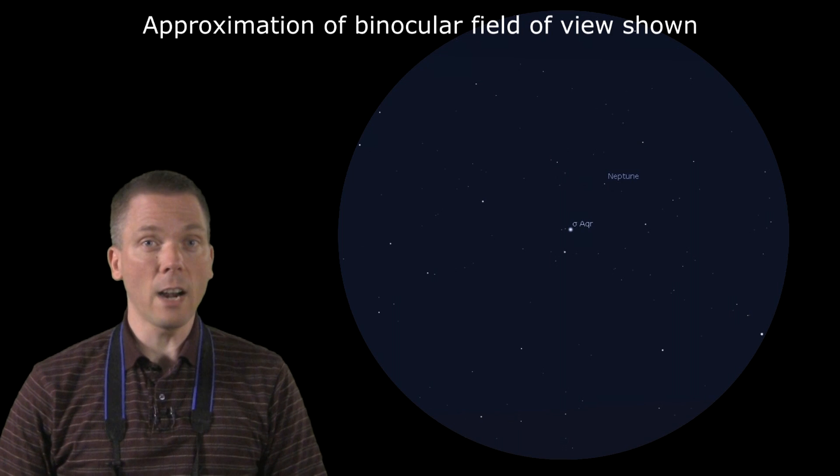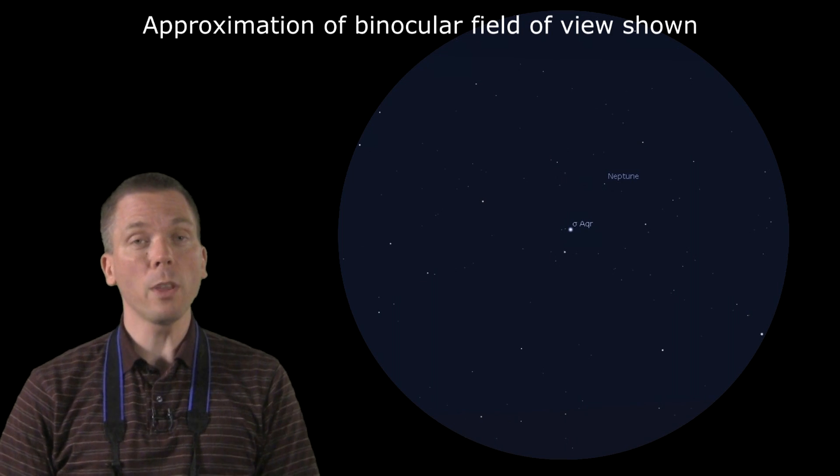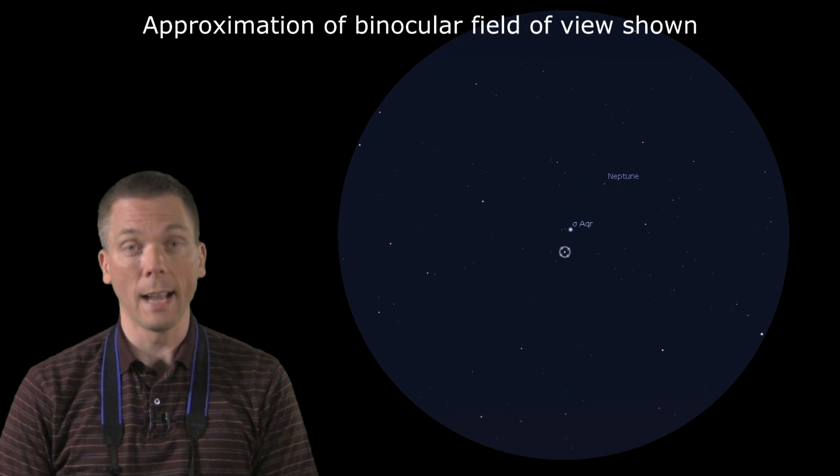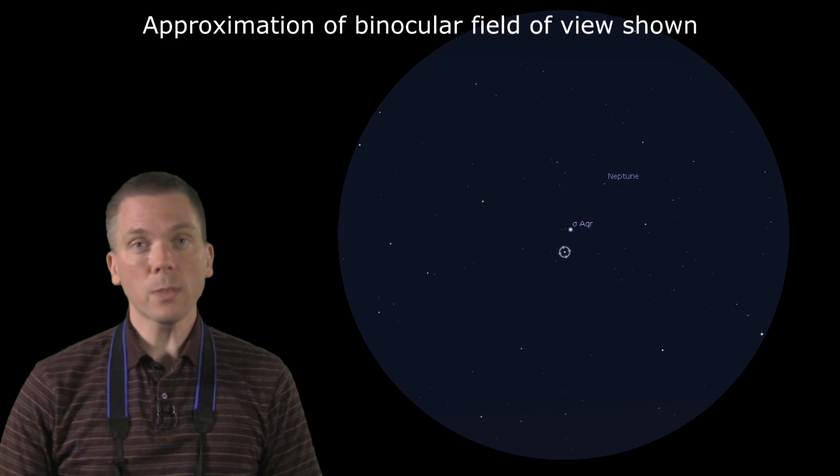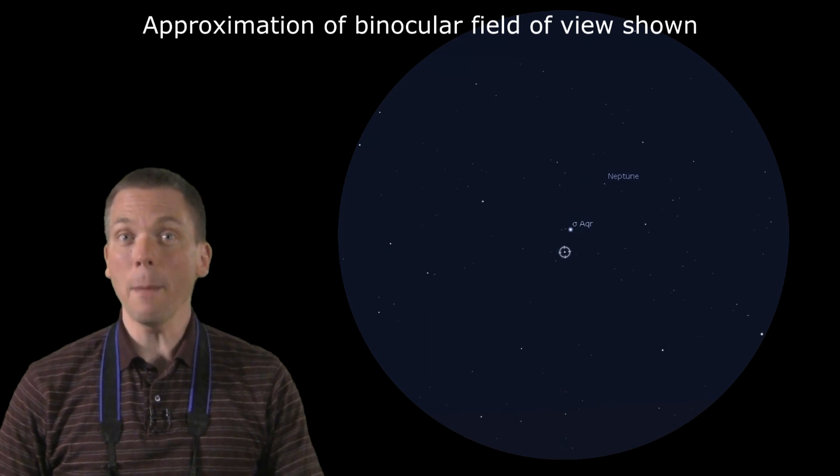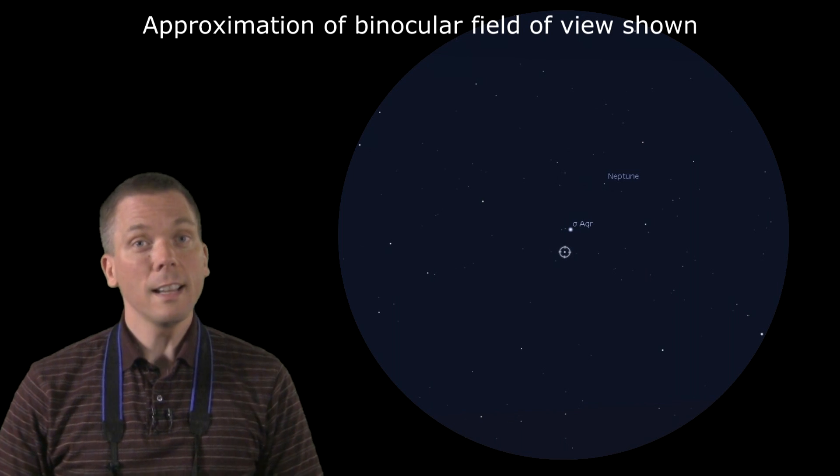The next brightest star in the area is quite close by, 6.3 magnitude 58 Aquarii, about one third of a degree away. Twice as far from Sigma, but in the opposite direction of those two stars, is Neptune. It will be moving slightly to the west all week, but it's the only object in that area close to Sigma.